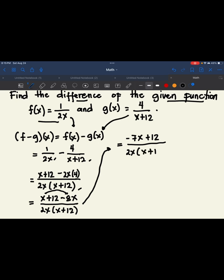Then simplify. Since the leading term is negative, we multiply the whole equation by negative 1. So it becomes negative 7x minus 12 over 2x times x plus 12. So this is now our final answer.